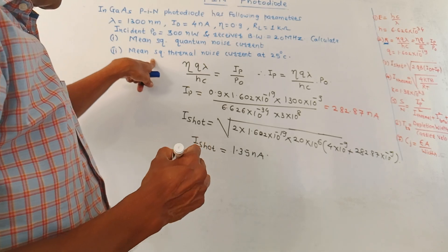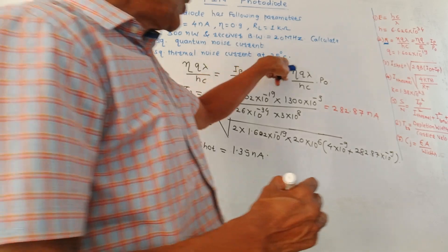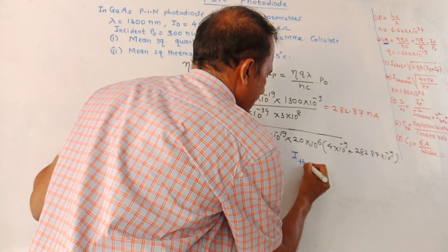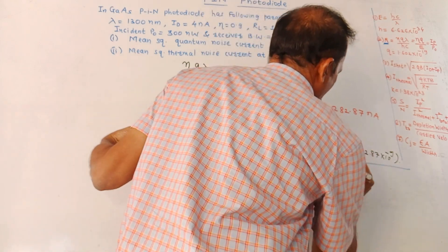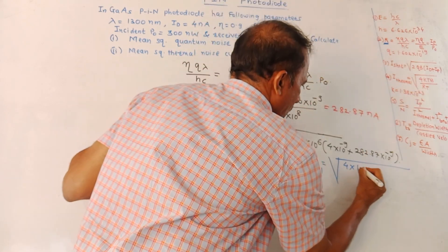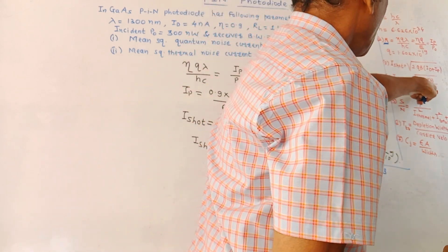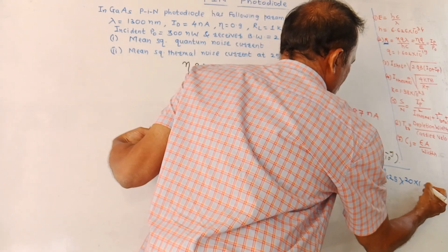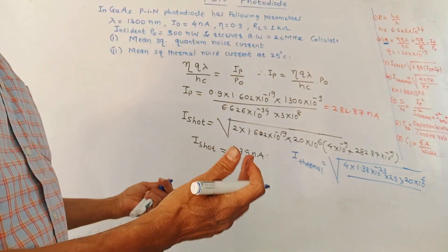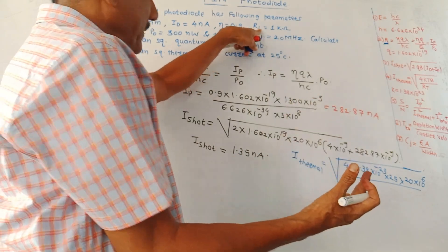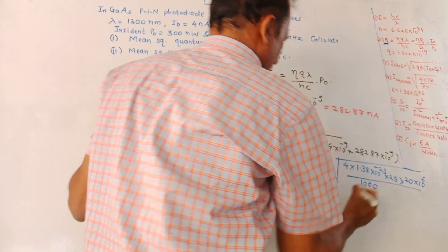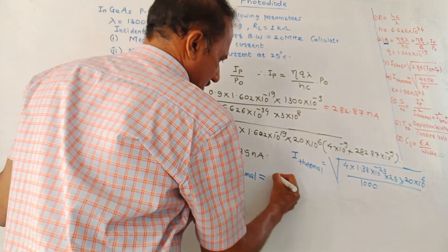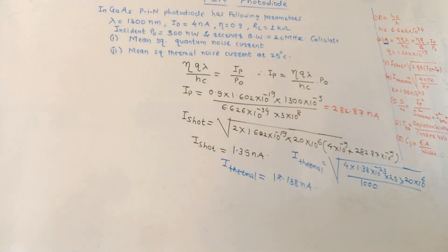For the second part, the mean square thermal noise current at 25°C: I_thermal = √(4kTB/R_T), with k = 1.38 × 10⁻²³, T = 25°C, B = 20 × 10⁶ Hz, and R_T = R_L = 1000 Ω. Solving, the thermal noise current = 18.138 nanoamperes.